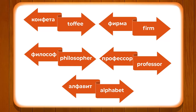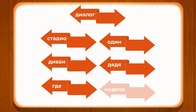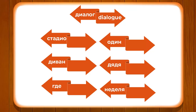Let's look at these new words again. I recommend you note these words in your notebook to build your vocabulary and use them in simple sentences. DIALOG means dialogue, STADION means stadium, ODIN means one, DIVAN means sofa, DYADYA means uncle, ZHILET means waistcoat, and NEDELYA means week.